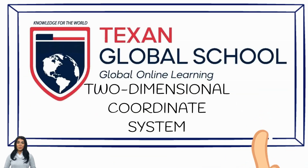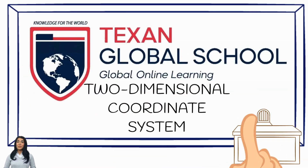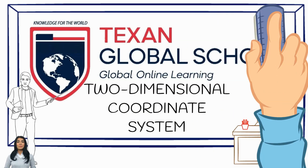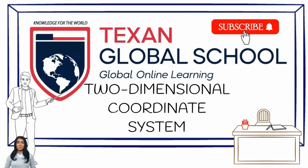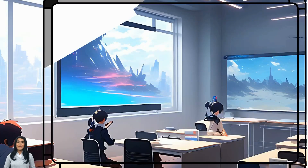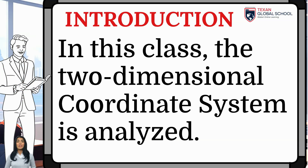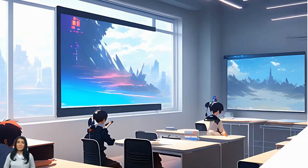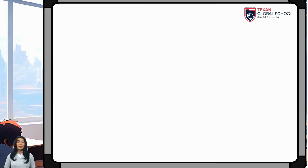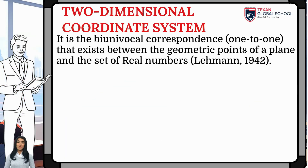Texan Global School: Two-Dimensional Coordinate System. This class analyzes the two-dimensional coordinate system, also known as the Cartesian system or planar coordinate system. Lehman establishes that the two-dimensional coordinate system is the bijective correspondence, or one-to-one, between the geometric points of a plane and the set of real numbers.